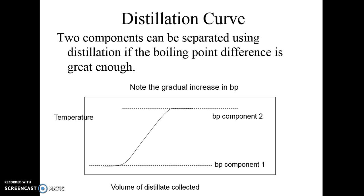You can plot the temperature of what you're boiling versus how much comes through. If you have two components and you're separating them, as you start distilling, the temperature stays steady until most of the first component has come over. Two components can be separated — usually one is the compound you want and the other is an impurity.